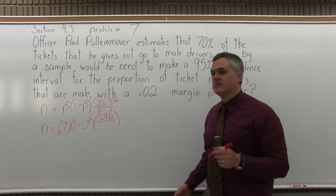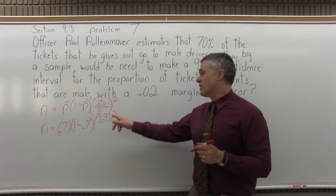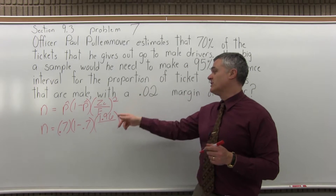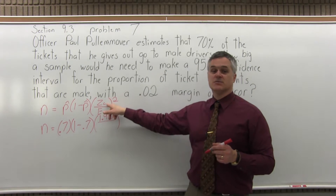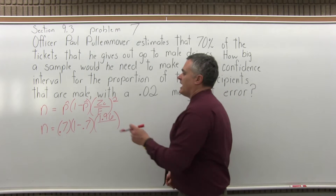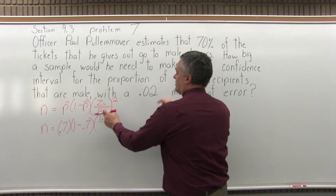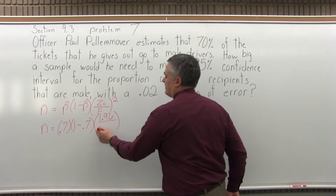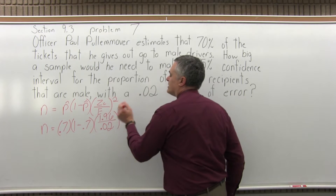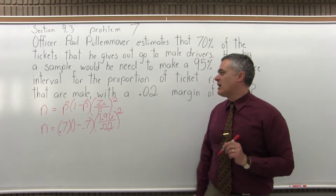There's a little chart in the notes that has some of the common levels of confidence and what the confidence coefficient would be for each level. For 95%, the z sub c is 1.96. Now e, the margin of error, is .02. And the second parenthesis is raised to the second power — that's just the way the formula works.